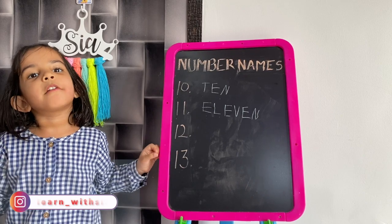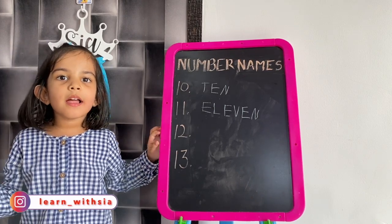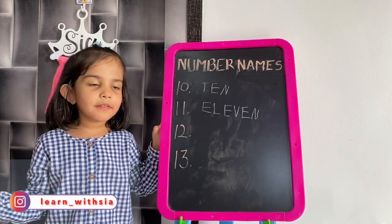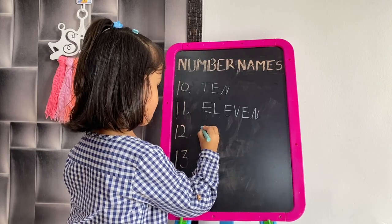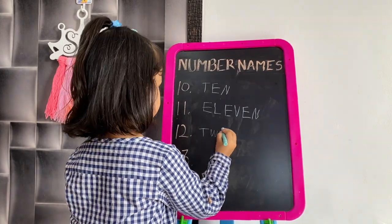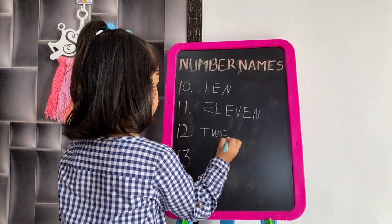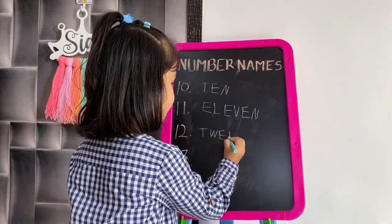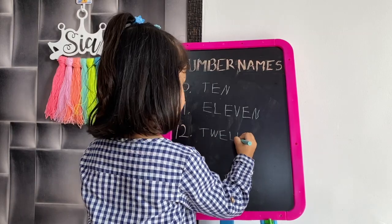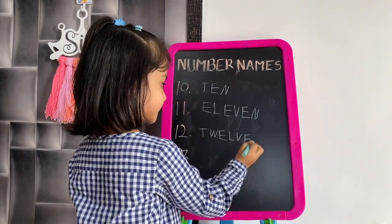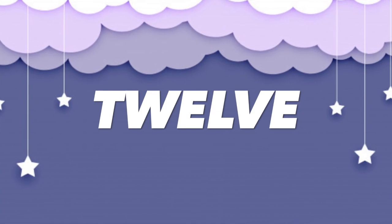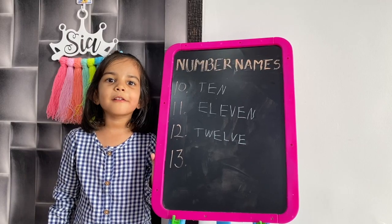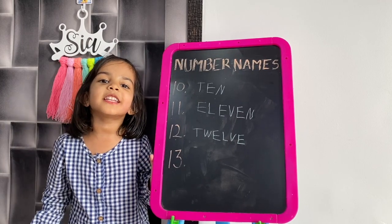Now I will write 12. T, W, E, L, V, E. 12. T, W, E, L, V, E. 12.